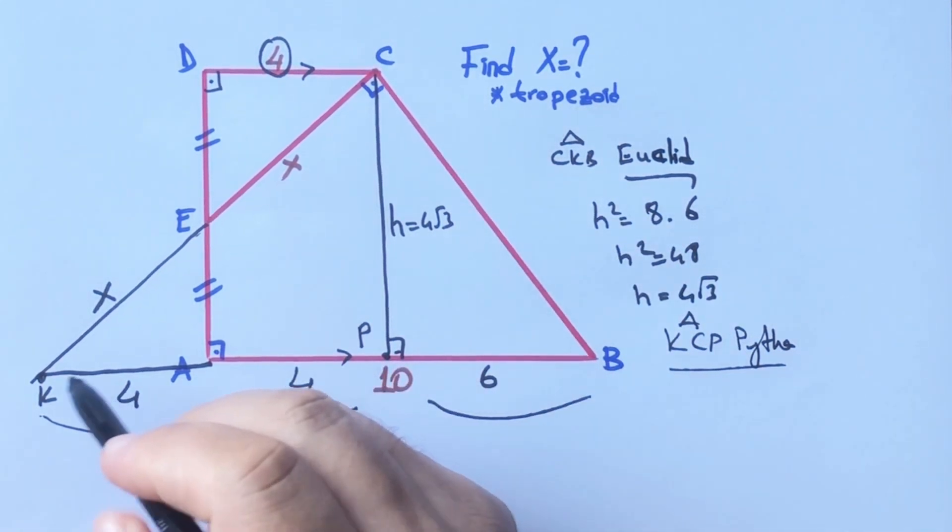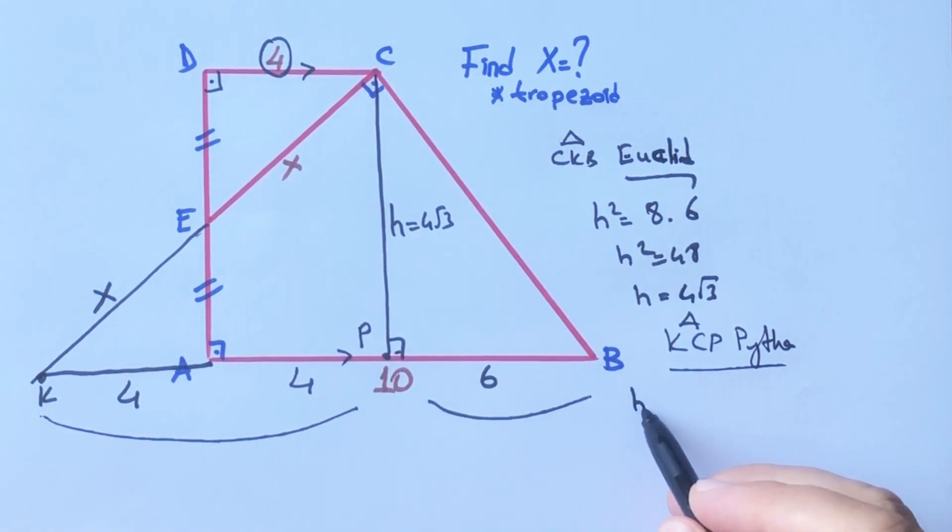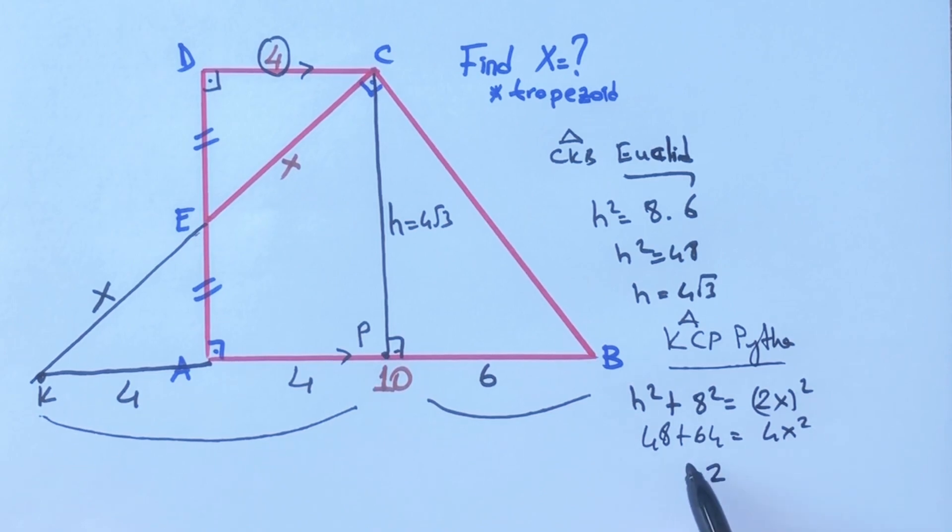Okay, 8² plus h² equals 2x². x² is 48 plus 64 equals 4x². Therefore 112 = 4x², 28 = x², so x = 2√7 units.